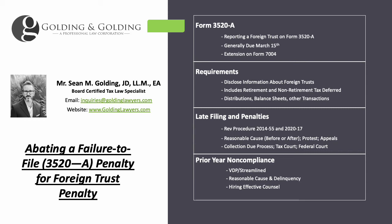Going to appeals has pros and cons. You should speak with someone experienced before making any proactive representation, because if you do appeals it may eliminate the opportunity to do a collection due process, which is typically better. You may not want to do a collection due process either, because you're kind of a sitting duck waiting to get a proposed notice of levy, which is less severe than an actual notice of federal tax lien, which could impact your entire life. Waiting to that point is called an end-game opportunity — there are pros and cons. Then, depending on which route you go, you may qualify for tax court or federal court.